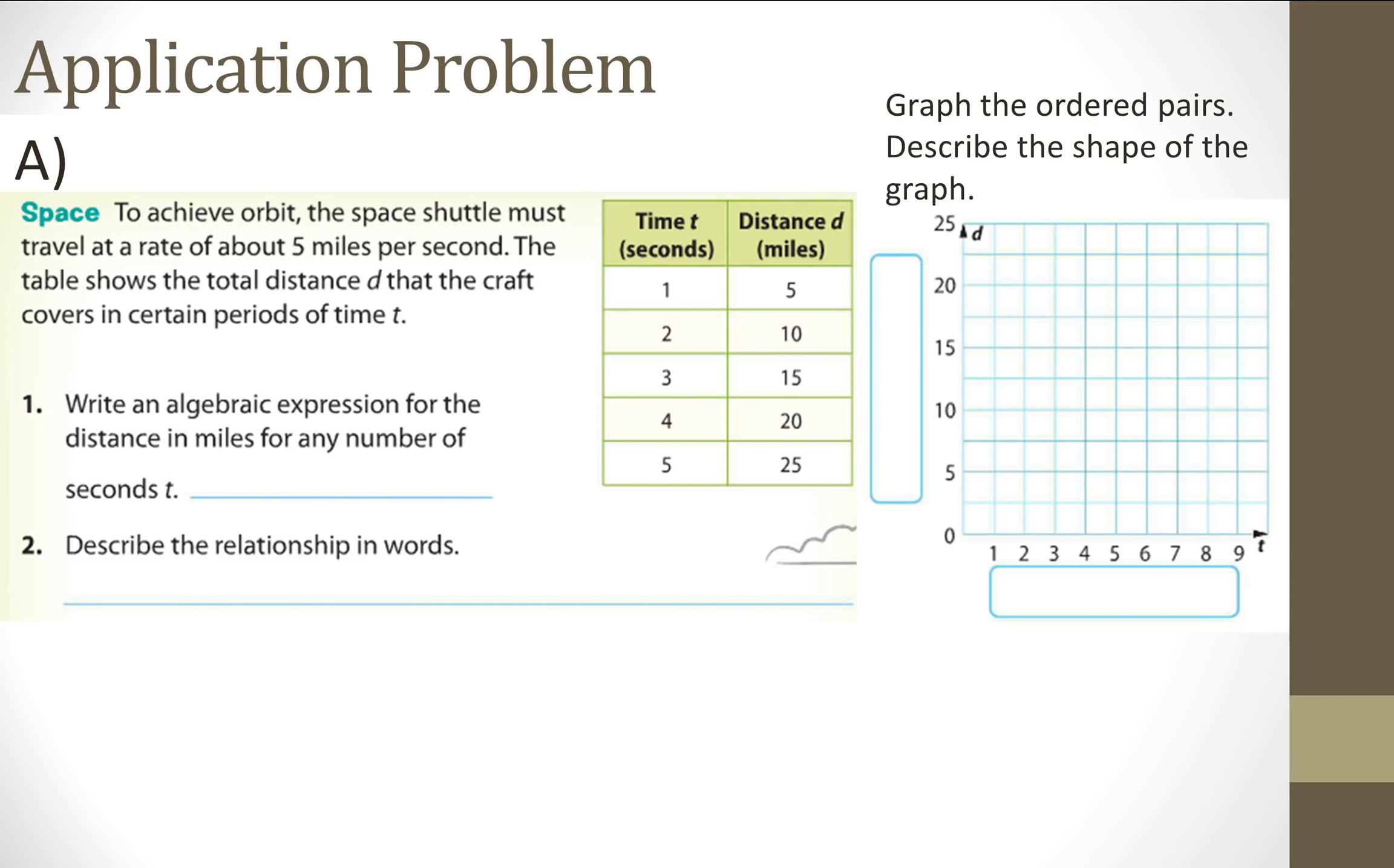So we have an application problem to achieve orbit. I give you guys the context for where this came from. This is exact same table from the previous slide. And I want to write an algebraic expression for miles in any number of seconds. So I'm going to take the first point. And since I know that distance is going to equal M times T seconds plus B, the Y intercept.